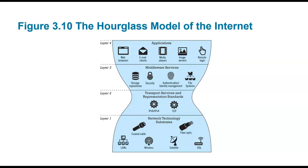At layer four, things like web browsers and media players are limited by the connection. On my local network at St. Francis I'm going out to the internet along with everybody else. Storage, RAM, and security aspects all factor in — I want to browse the web, check email, watch videos, and all of these are based on someone else's server, ultimately slowed down by the hourglass bottleneck in the middle.